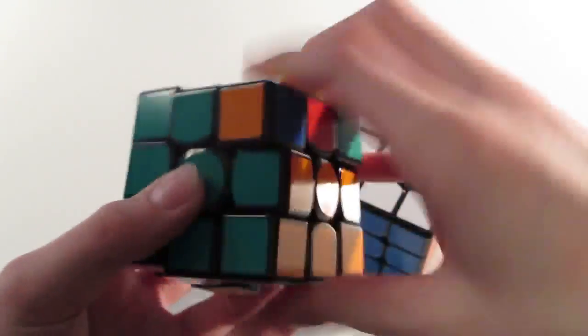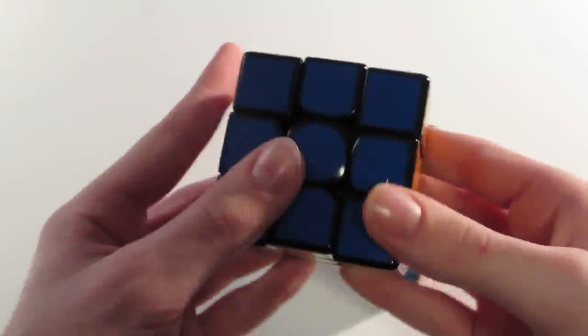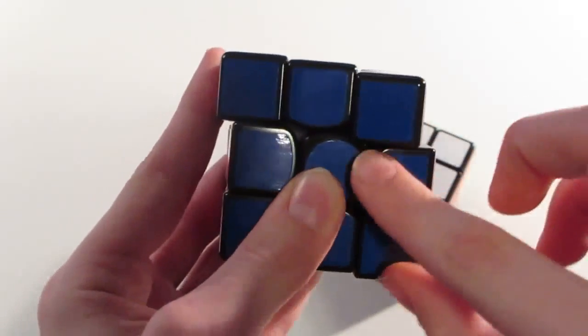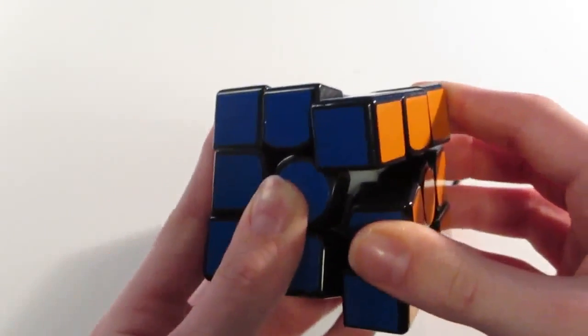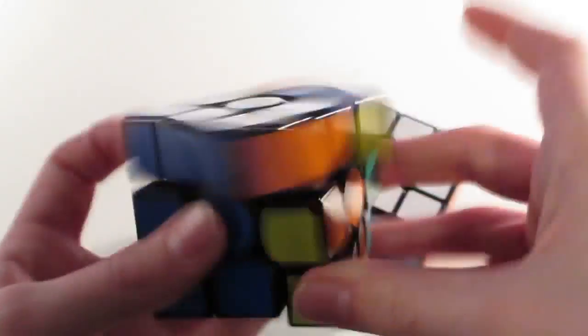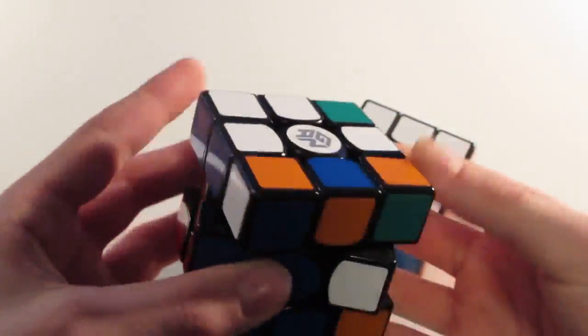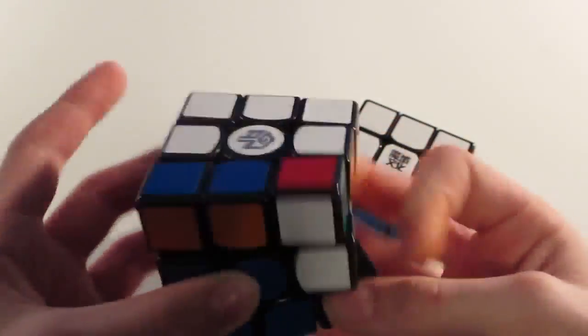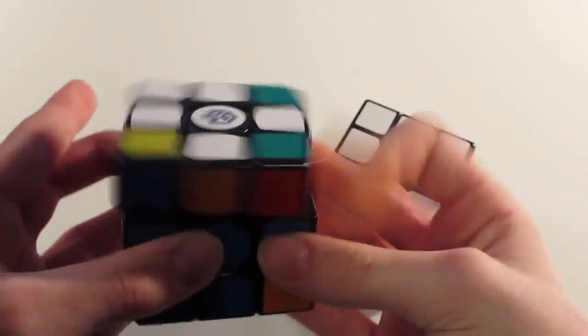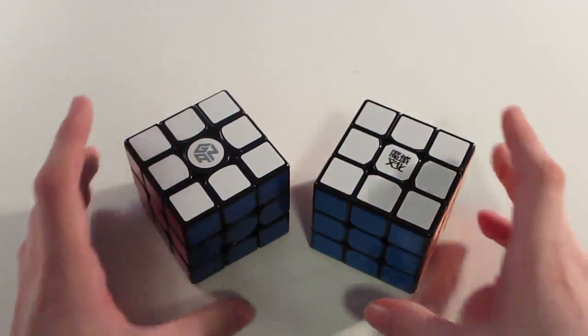But surprisingly, even with the fantastic corner cutting, I still get catches on this cube. And it's most likely because if you see the corners are squared off, and they can catch on the center sometimes, like that. This cube does catch sometimes, but the corner cutting in itself is fantastic. But I do still experience some catches and lockups during solves.